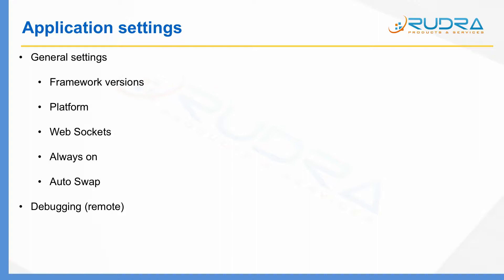The next one is AutoSwap. I'm going to explain about AutoSwap in detail in the next section of the course, where we are going to talk about deployment slots. It's basically a mechanism using which you can swap a slot with your production slot. I'm going to explain in detail in the deployment section of the course.